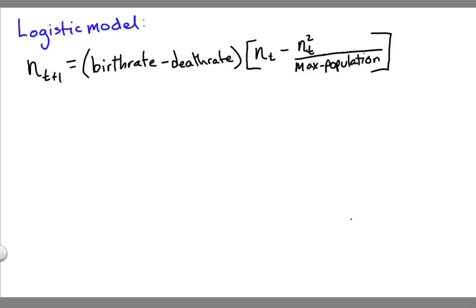Now let's turn to exploring the dynamics of the logistic model. You might remember that n sub t+1 is the population at time t+1, and that was equal to the birth rate minus the death rate, times the population at time t minus the number of individuals who die due to overcrowding, which is the population at time t squared divided by the maximum population, or the carrying capacity.